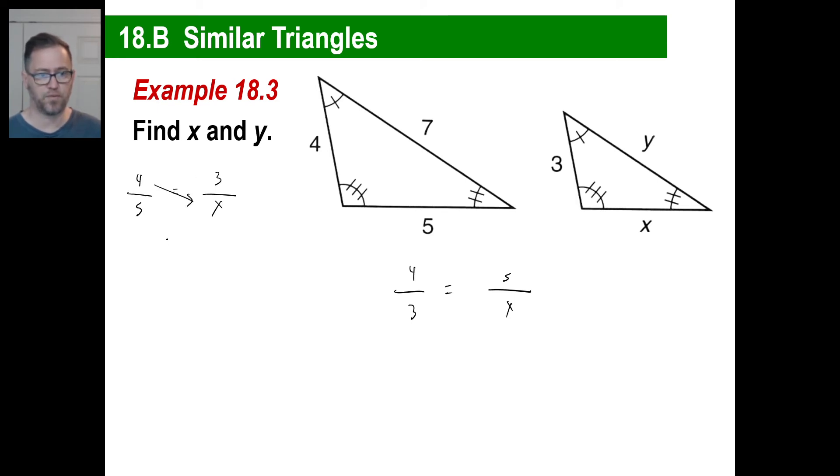All right. We'll cross multiply four times X is equal to five times three. And you can just leave it, you know, X is equal to 15 over four. There you go. Okay.